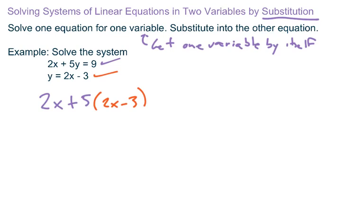And then 2x plus 5y equals 9. So this looks just like the original equation, but where the y is, I replace it with 2x minus 3.